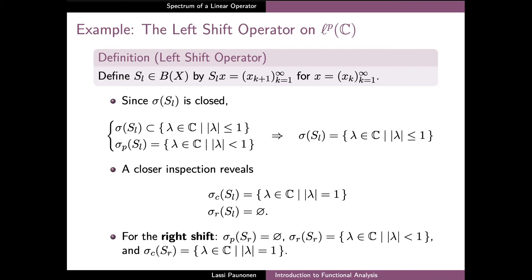Finally, we can note that the spectrum of the right shift operator can be analyzed in a similar manner. Since this operator also has norm equal to 1, its spectrum is similarly contained in the closed unit disk. The structure of the spectrum turns out to be a bit different, since the right shift operator does not have any eigenvalues, but instead the open unit disk is contained in its residual spectrum. The boundary of the disk, on the other hand, is contained in the continuous spectrum of S_R, similarly as in the case of the left shift operator.